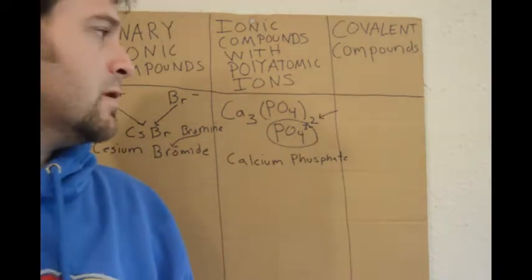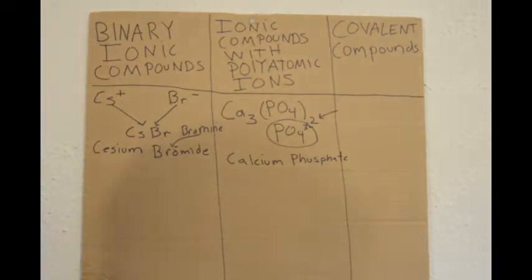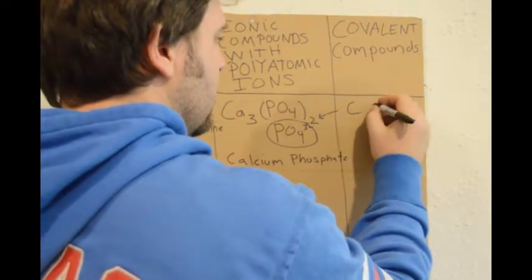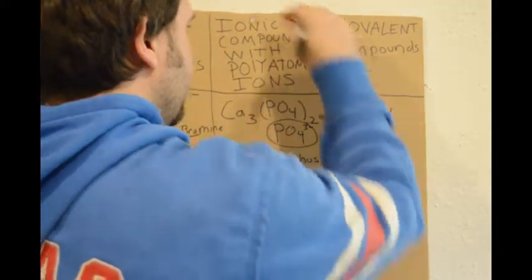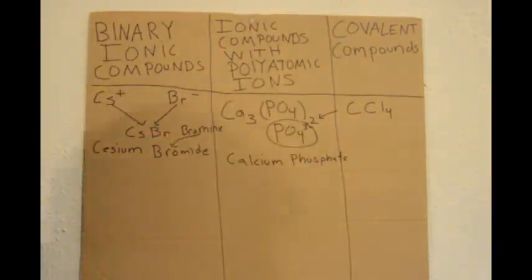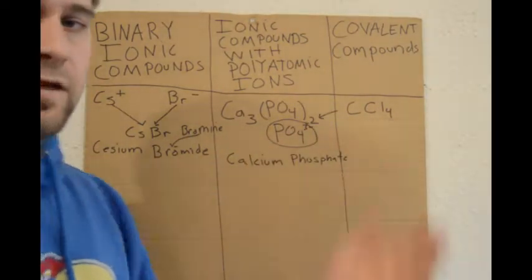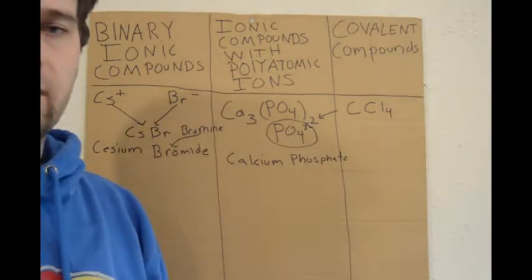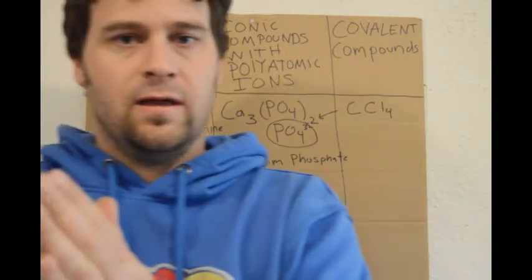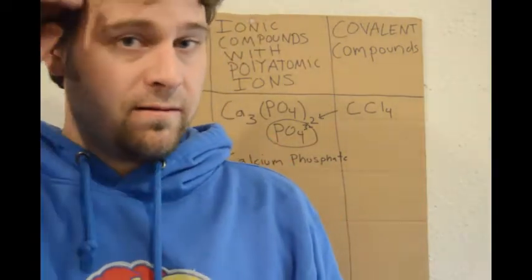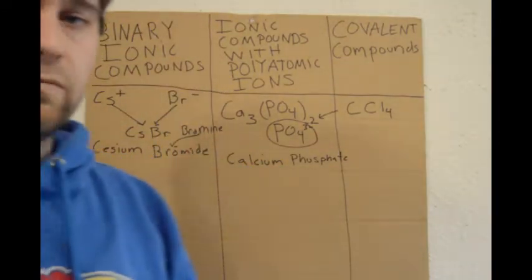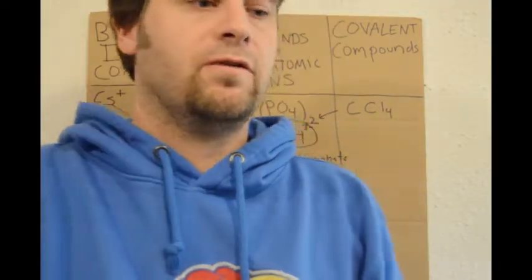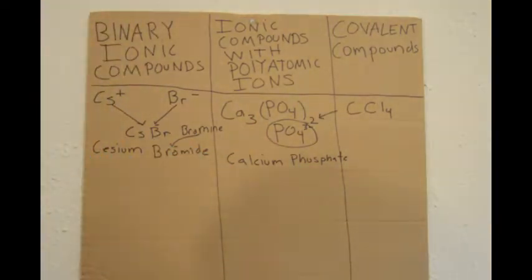Now covalent compounds are even easier, but to some people more difficult to name. So let's imagine that we have a compound with one carbon and four chlorines. We would identify this on paper as being a covalent compound because it has no metals. So if you look at your periodic table, everything to the left of the metalloids is a metal, which means most elements on the periodic tables are metals. A very small section in the upper right-hand corner of your periodic table are non-metals, and then also remember that hydrogen is also not a metal.